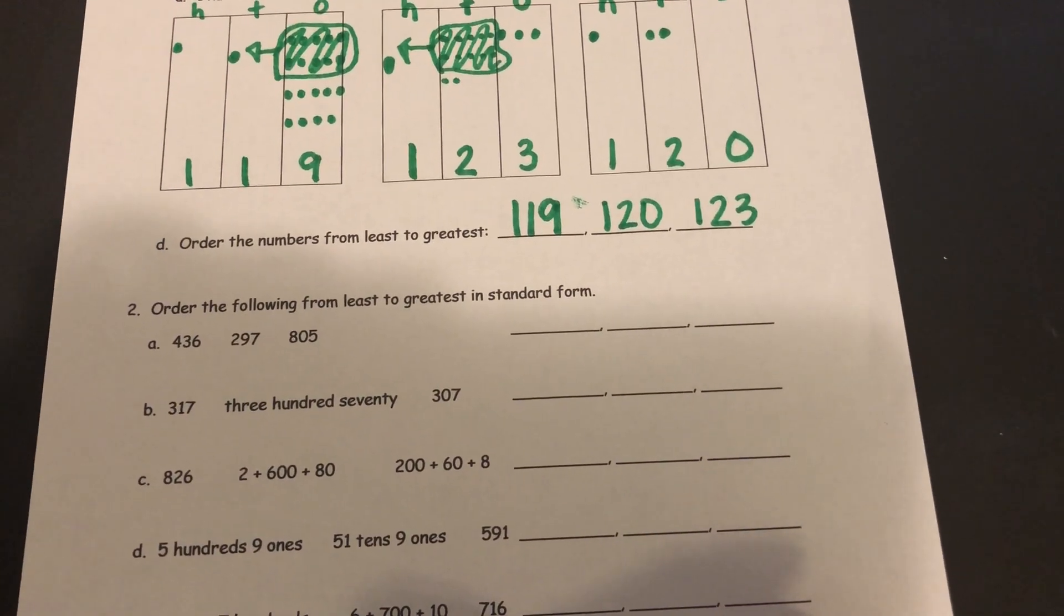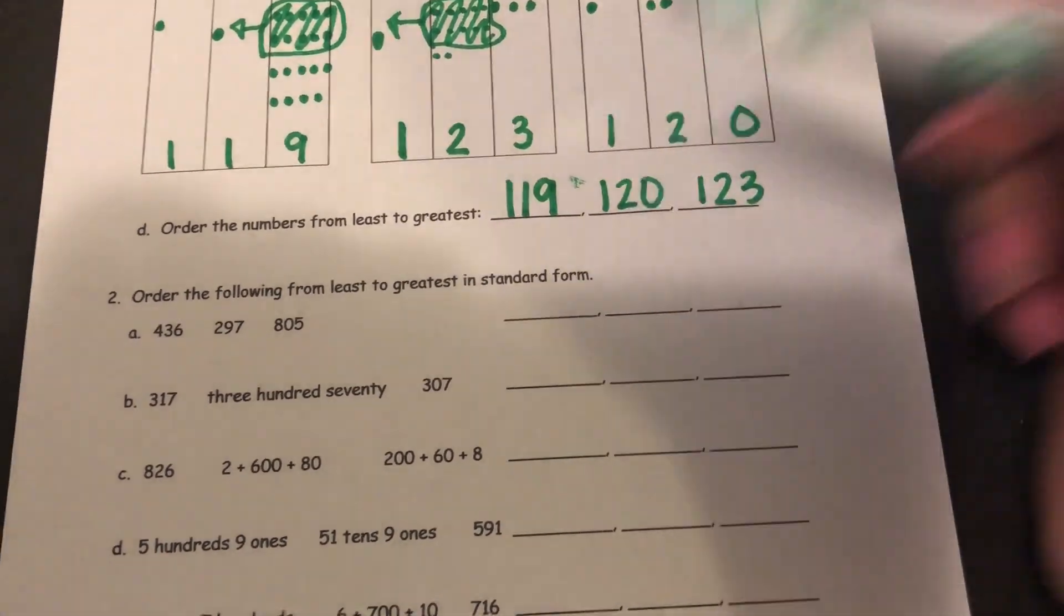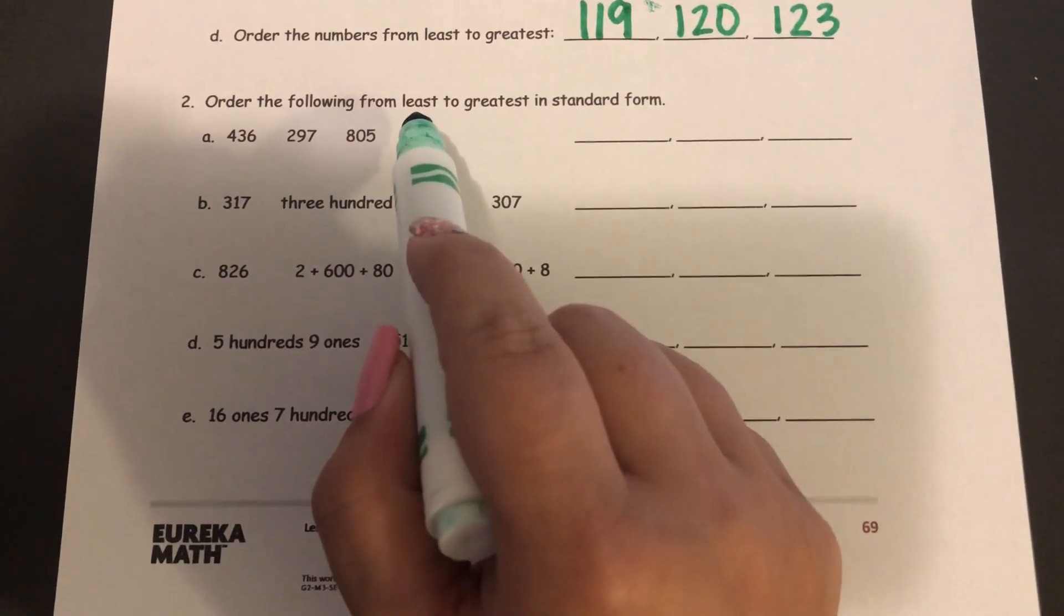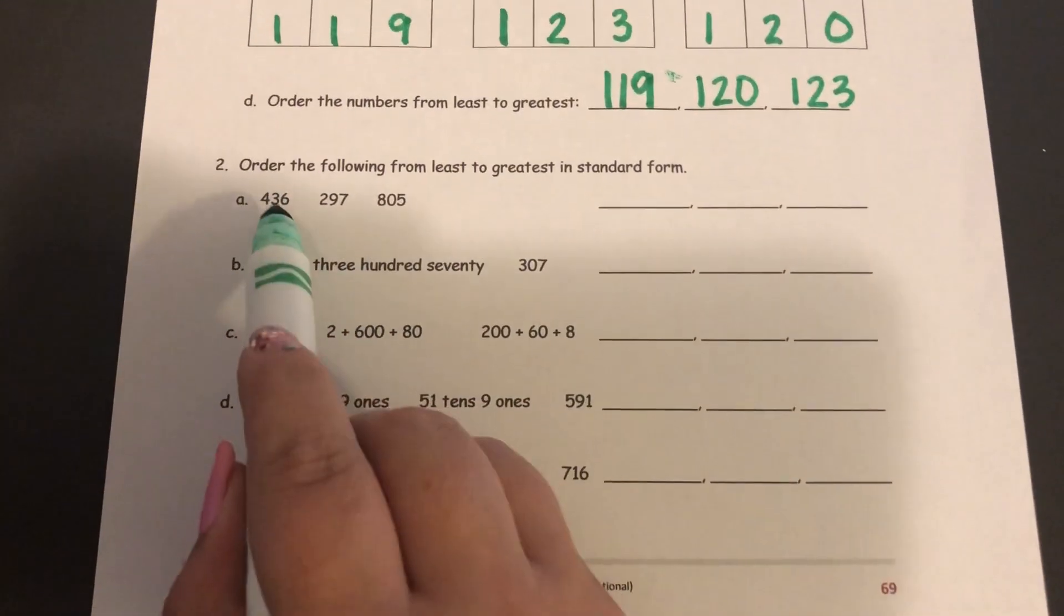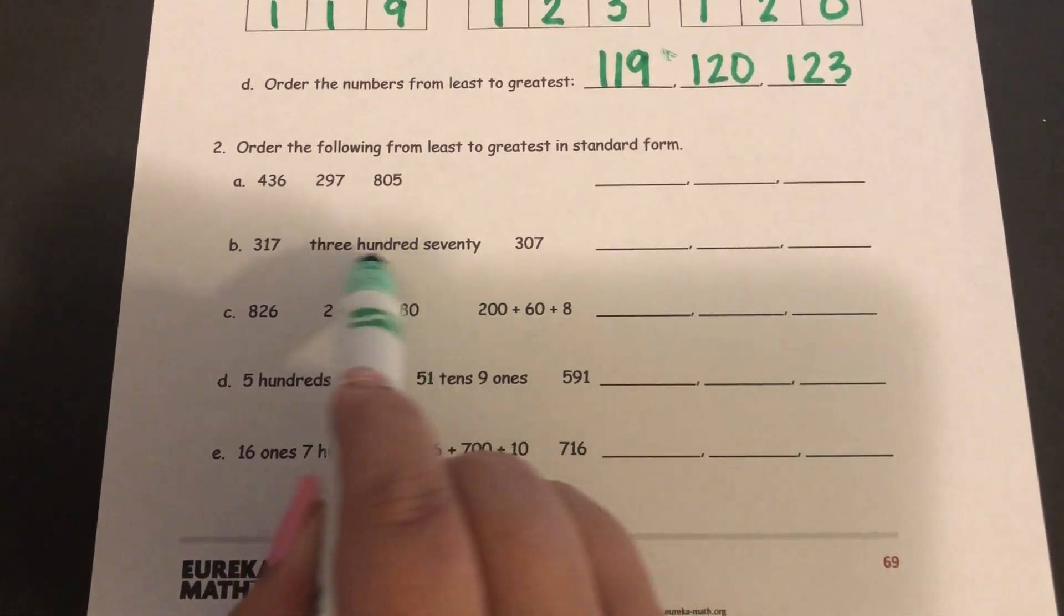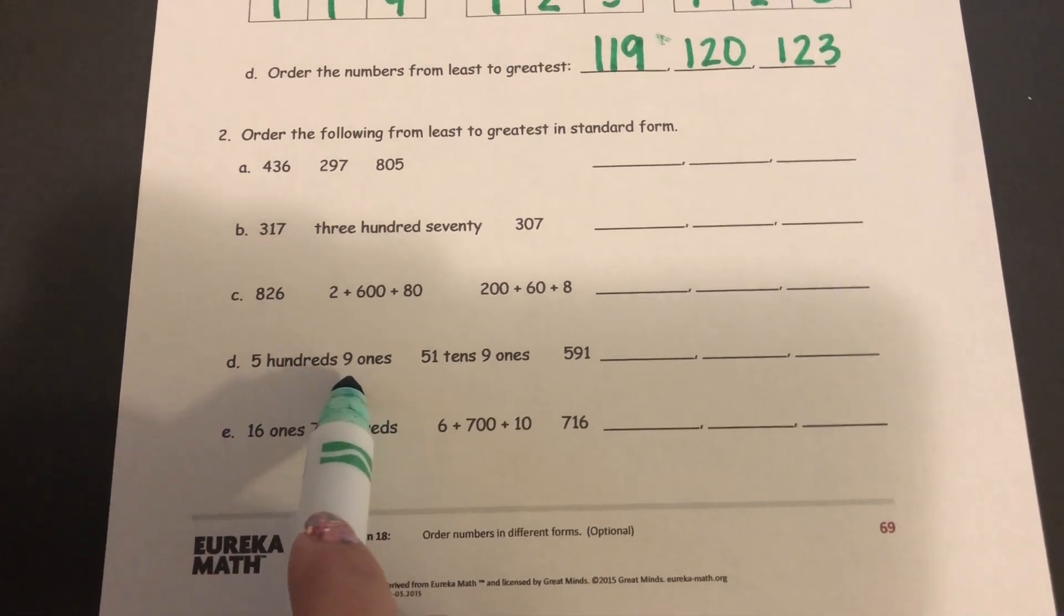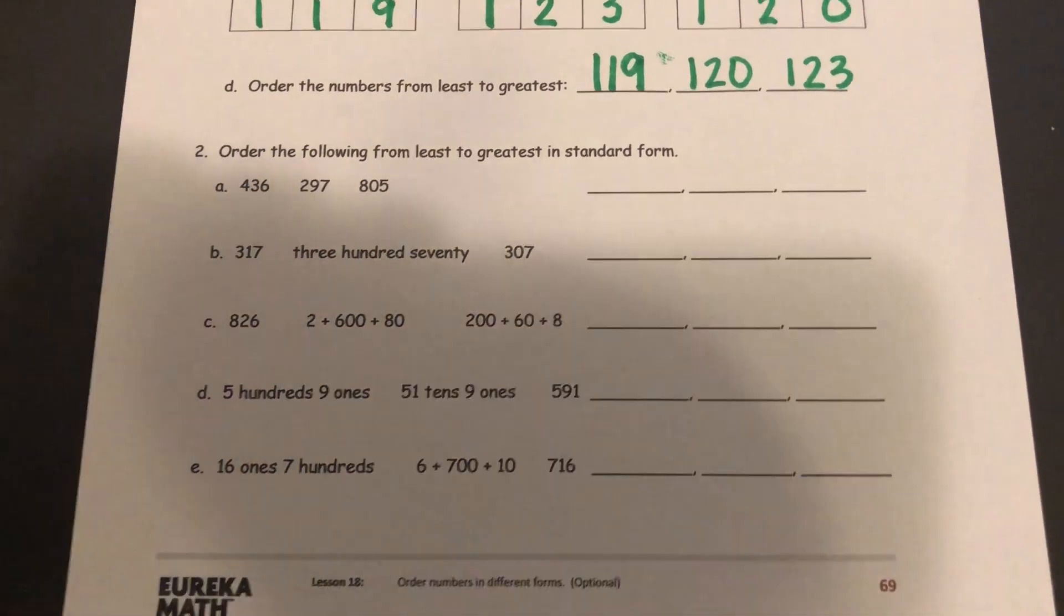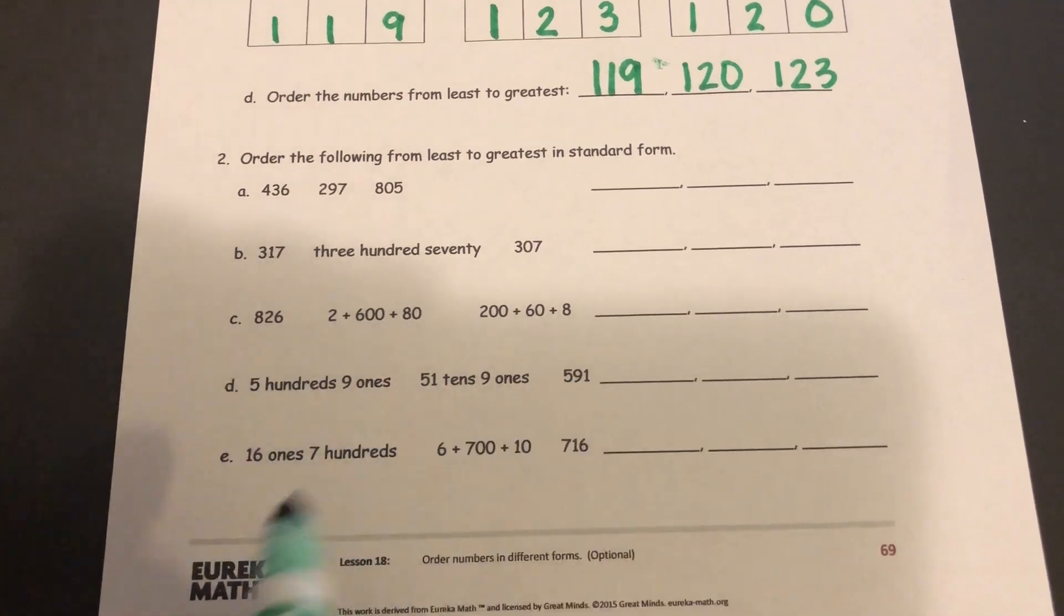The next sections are also just ordering them going from either least to greatest or greatest to least. So in this next section, you start with the least, you end with the greatest. If they don't give you the numbers in standard form, like these are already in standard form, but if you get to one and it gives you it in word form or expanded form or unit form, you're just going to need to put them into standard form first. So I'll show you an example with this one over here. Actually, let's do this one.